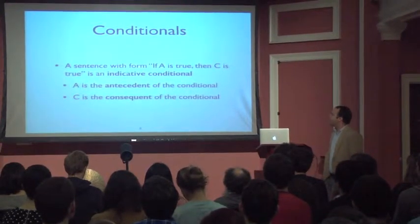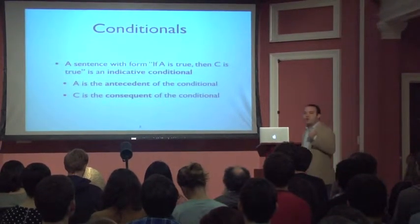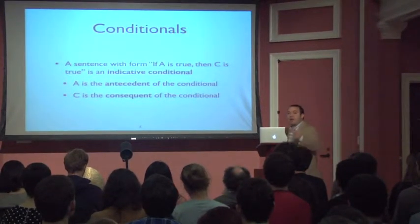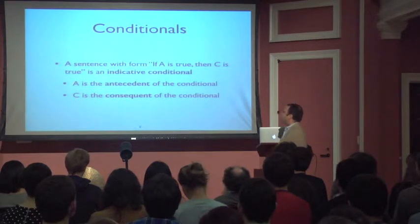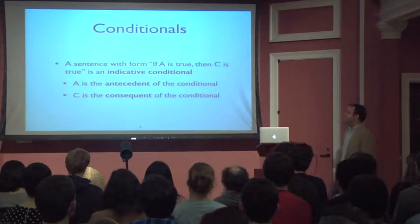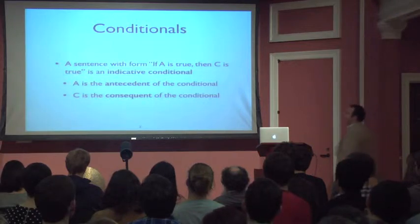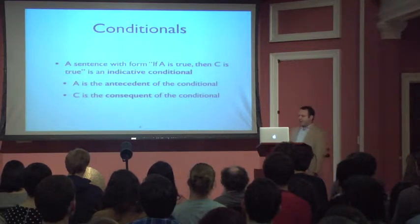Something like, if there's food in the other room, then there will be a lot of people there. So A is the antecedent of our conditional, and C is the consequent of our conditional. And the full sentence, 'if A is true, then C is true,' is our indicative conditional.